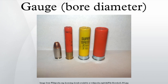Thus there are 12 twelve-gauge balls per pound. The term is related to the measurement of cannon, which were also measured by the weight of their iron round shot. An eight-pounder would fire a 2 lb spherical cast iron ball and had a bore diameter of about 91mm.